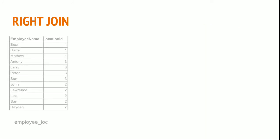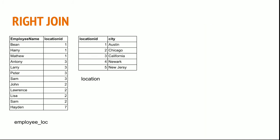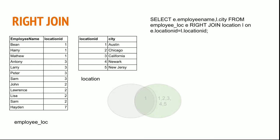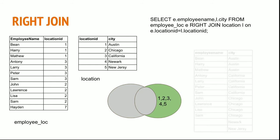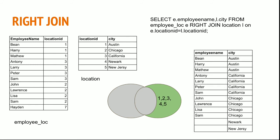Similar to left join we have right join. It will return location IDs 1, 2, 3, 4, and 5 because records 4 and 5 are in the right table but not in the left table. In the end result you can see New York and New Jersey present, but no employee is mapped for these two cities, returning null for the employee name field.